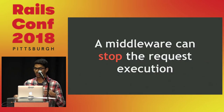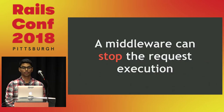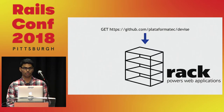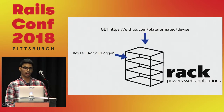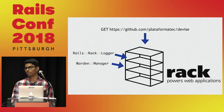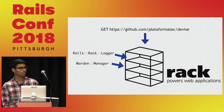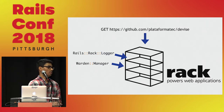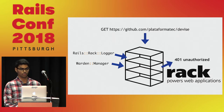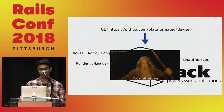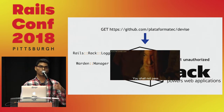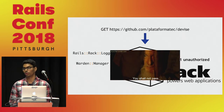A middleware can also stop the request execution. So imagine when a request comes in, it goes through the logger middleware, and then we have Warden's middleware. At this point, Warden says: in order to continue, a user has to be authenticated. But let's say in this case the user isn't authenticated — so we throw a 401 Unauthorized and the request halts. The other middlewares down the stack are never going to be called.